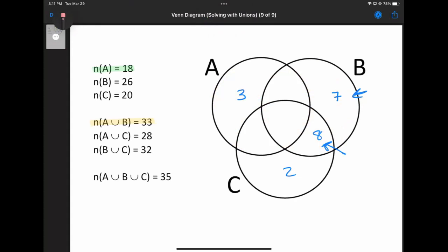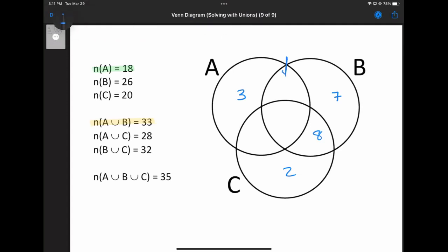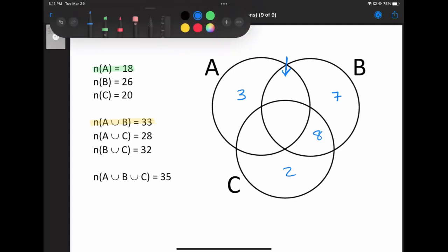Now get rid of the colors again, and we'll use the same logic to find, let's say, this piece at the top. This piece at the top is going to be everything in A and C. So actually, you know what, let's pull out the colors again one more time. Everything in A and C.